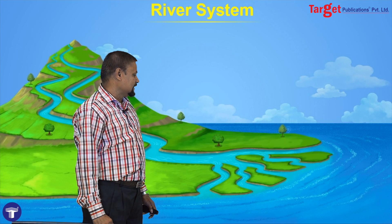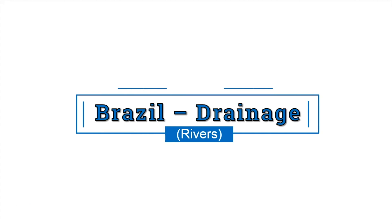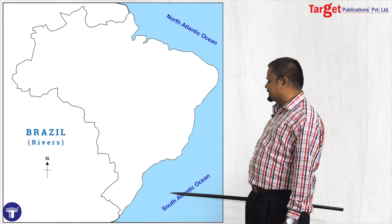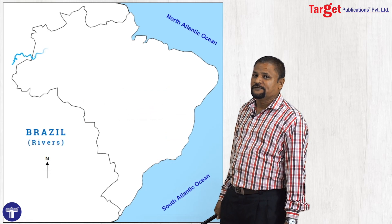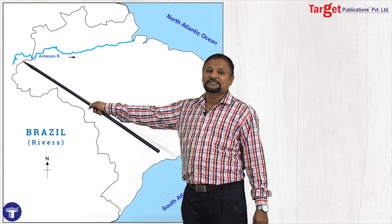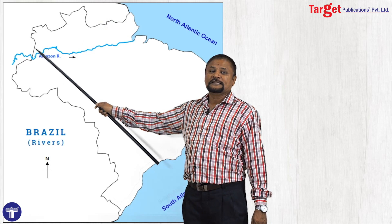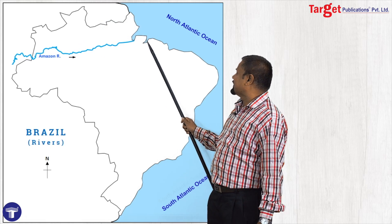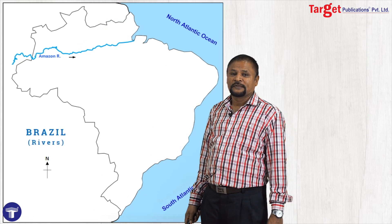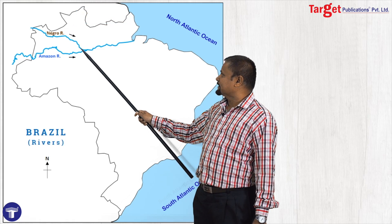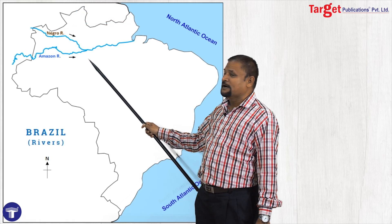These are some basic words about river anatomy. Now let us see some important rivers in Brazil. The first important river is Amazon River. Amazon River is starting from the eastern slopes of the Andes Mountain in Peru — meaning this river originates from a foreign country — and flows towards east, finally joining the North Atlantic Ocean. It has an important tributary, that is the Negro River, and at the confluence of Negro River and Amazon, the city of Manaus is there.